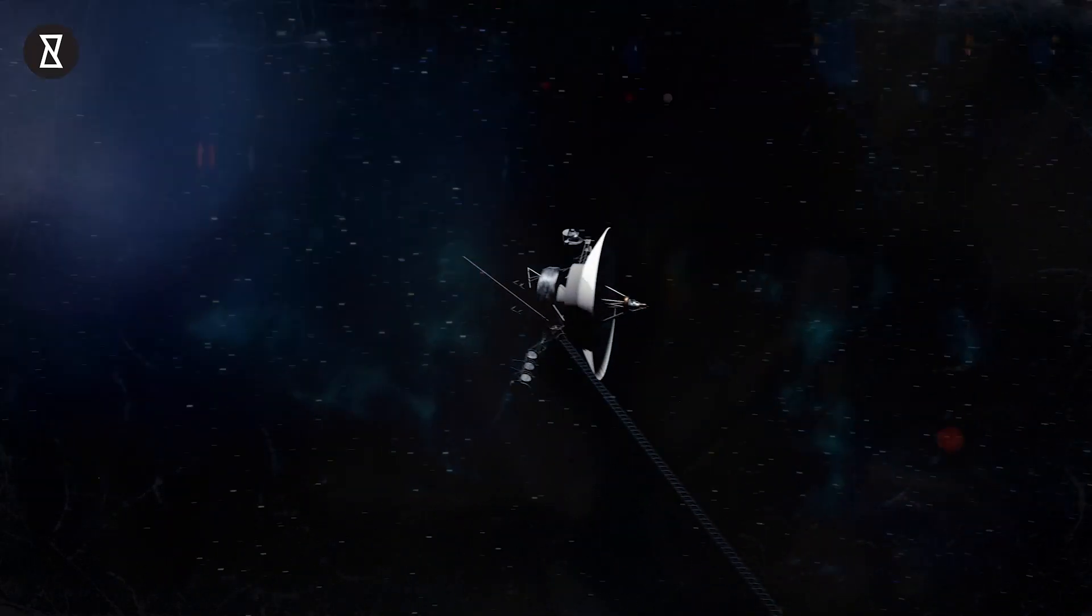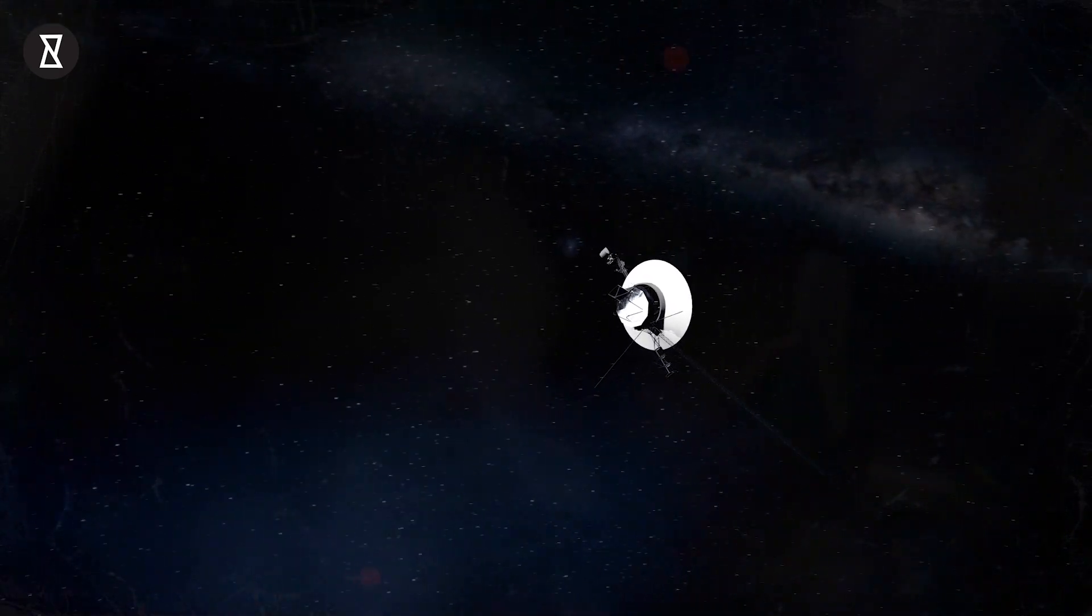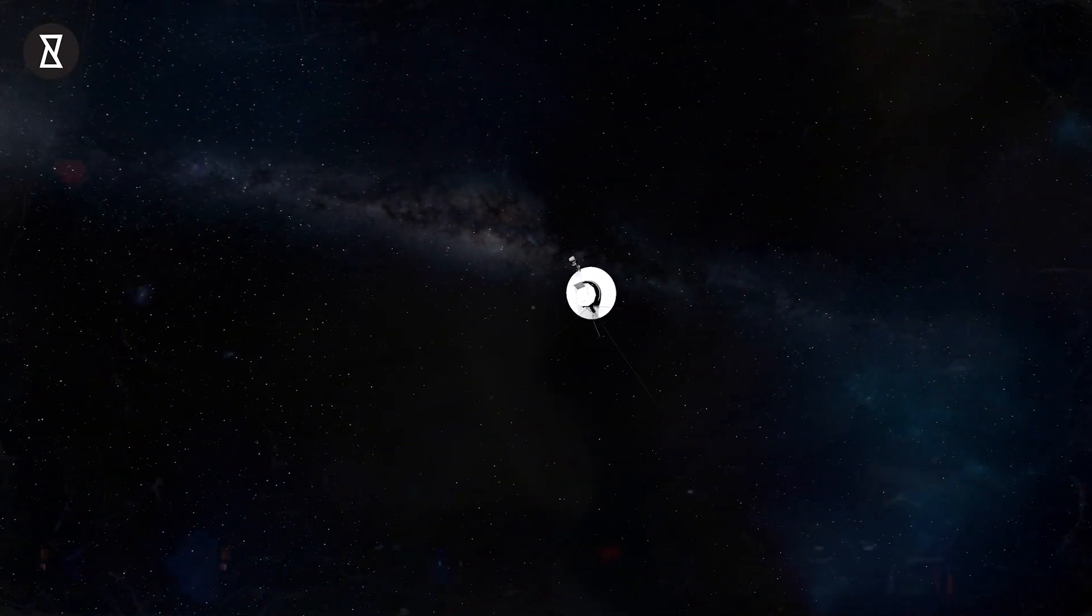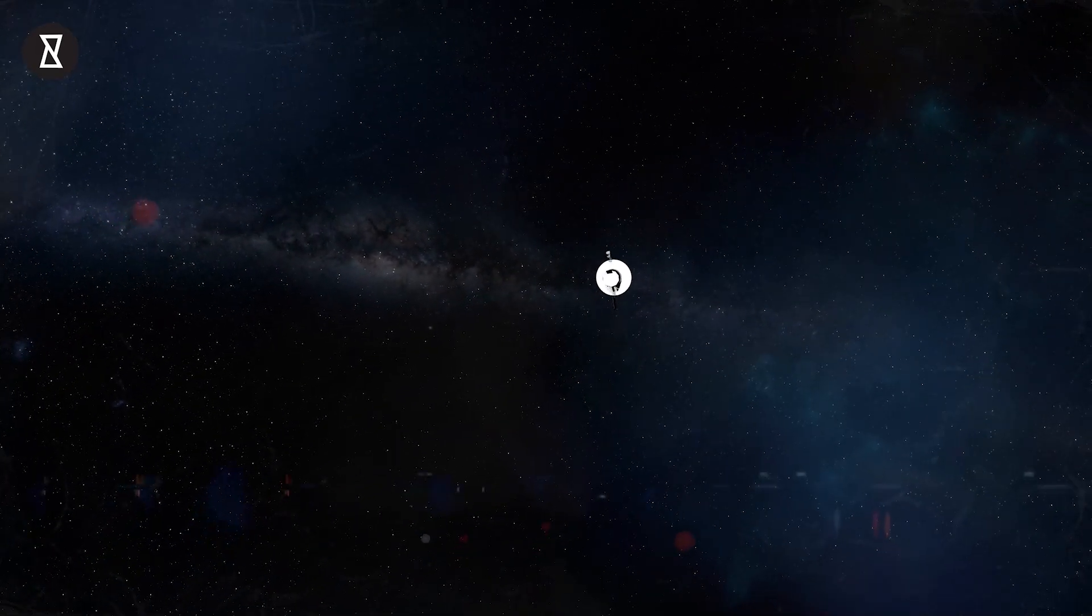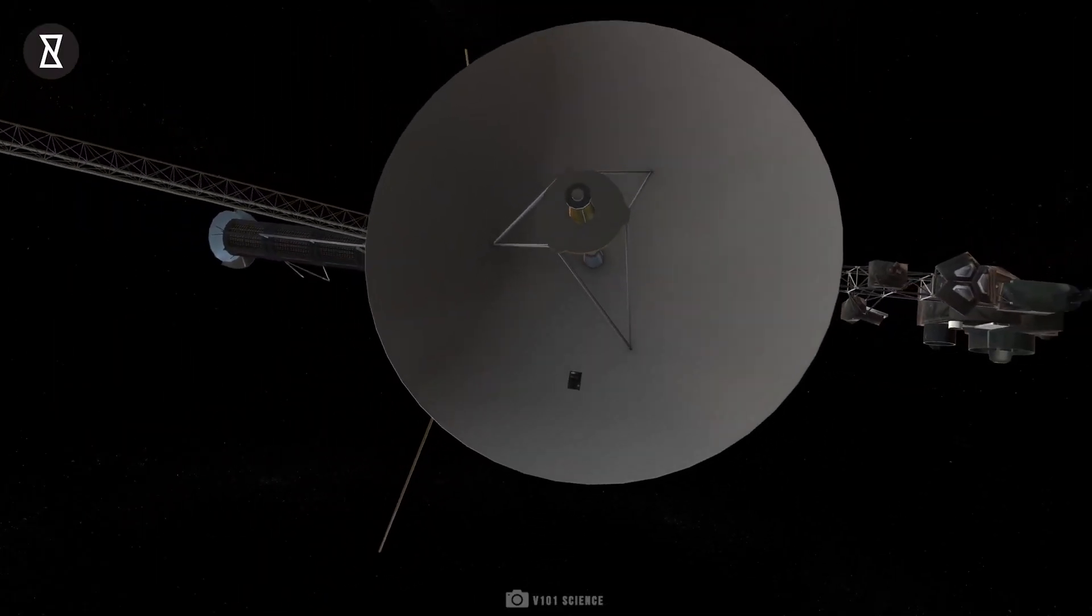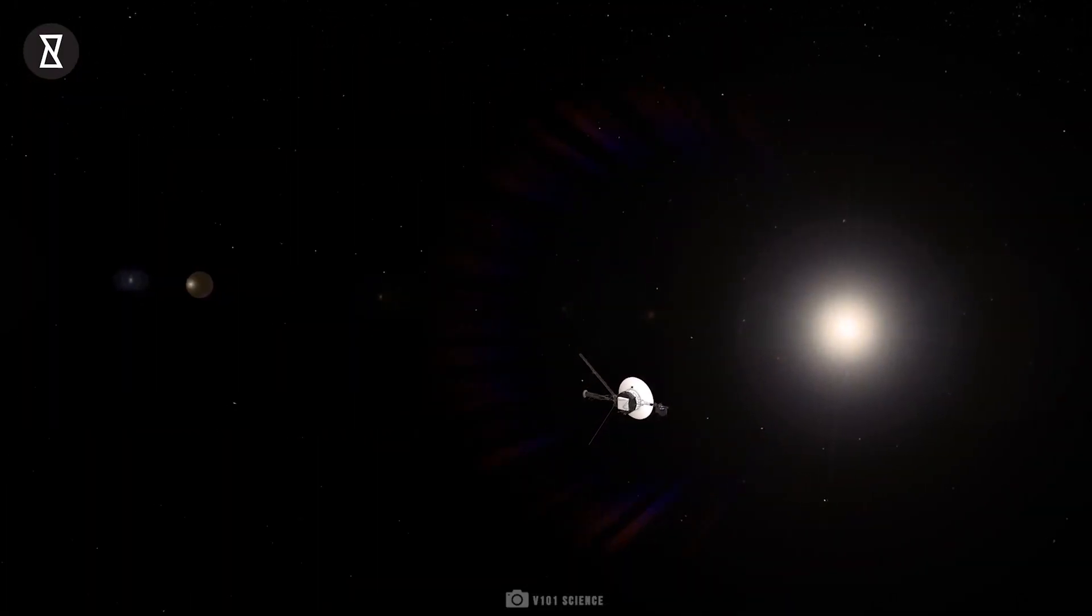NASA's Voyager 1 is some 14.6 billion miles from Earth, making it the furthest human-made object from our planet, having made it beyond the edges of the solar system and out into the interstellar medium.